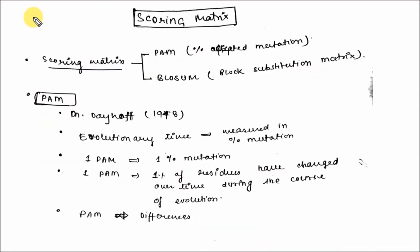Let's discuss the scoring matrices. Scoring matrix is used to compare two sequences. It is used to calculate the score and similarity scores when you compare two sequences or more than two sequences. Mainly two scoring matrices are used for similarity search. First one is PAM, percentage accepted mutation, and second one is BLOSUM, that is block substitution matrix. PAM is designed by M. Dayhoff. It represents the percentage mutation or you can say evolutionary time. One PAM represents one percentage of mutation, that is one percent residues have changed over time during the course of evolution. PAM directly represents the differences between the sequences. And BLOSUM represents the similarity between the sequences.